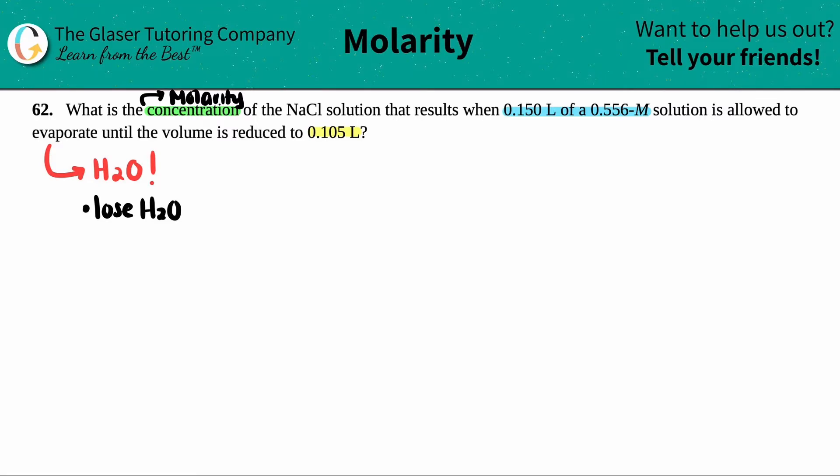So this is like the opposite of a dilution. A dilution is when you gain water, you add water to the system. Evaporation is when you lose it. Now, it actually doesn't matter whether you gain water or lose water. The idea is that the amount of moles in your solution, no matter how much water you add or how much water you lose, the amount of moles is going to be the same, which is why we can still use the dilution formula.